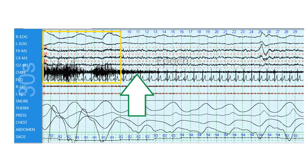Then we look over here, and what is this big feature right here? It is over half a second long. It has a sharp negative deflection followed by a positive deflection. So that is actually a K-complex. So we actually have three different criteria for three different stages all in one epic.